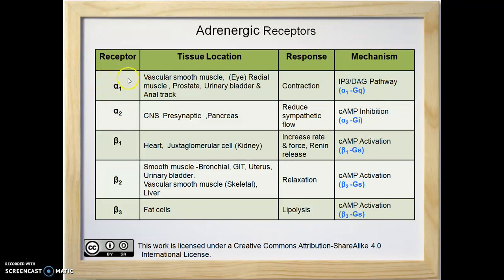Alpha-1 receptors are GQ-protein coupled receptors. Activation of alpha-1 receptors activates GQ-protein. GQ-protein activation leads to activation of phospholipase C. Phospholipase C creates phosphatidyl inositol bisphosphate.